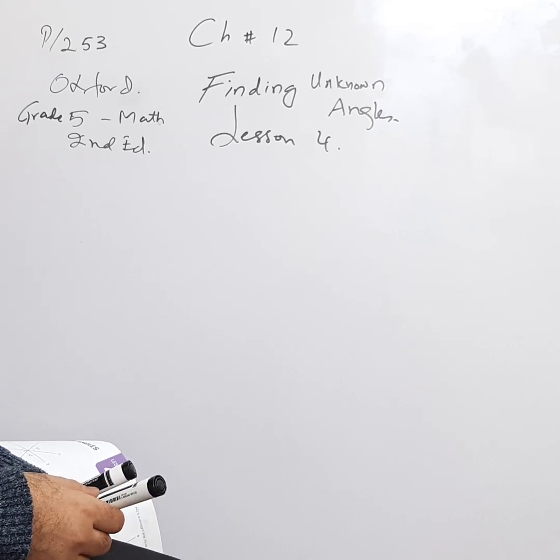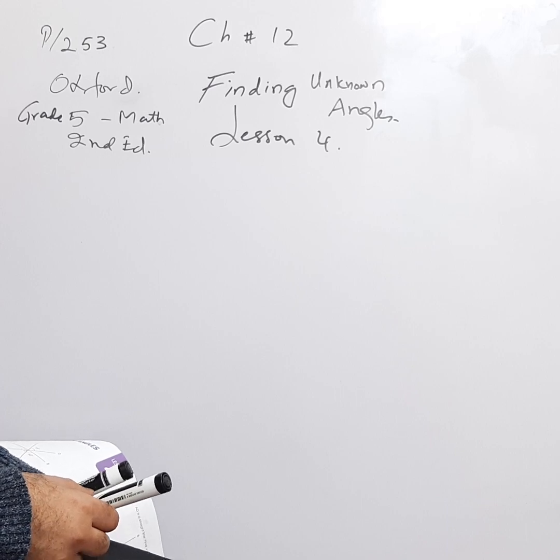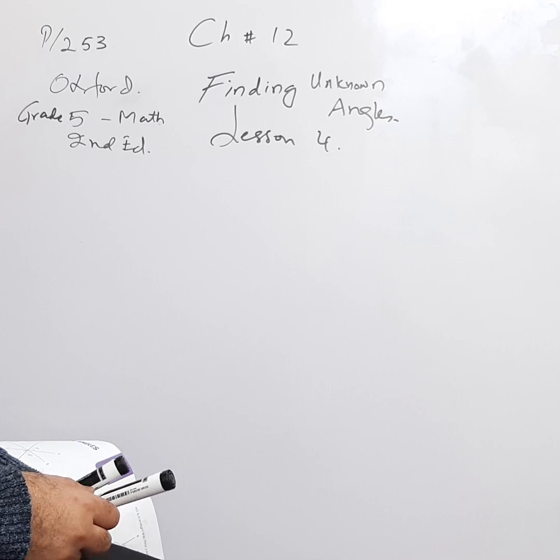Now we have reached lesson number four which is finding unknown angles. This is a mixture of all the concepts that you learned in the previous lessons one, two, three.